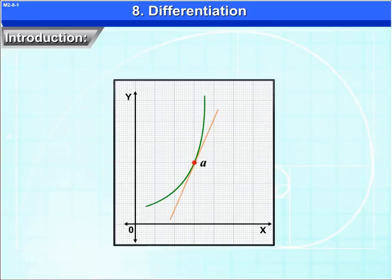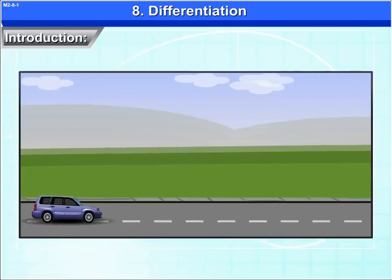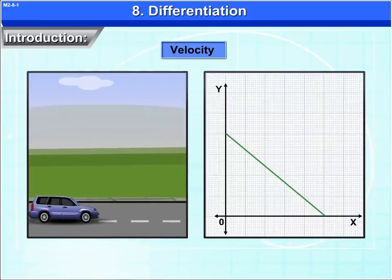We can find slope of tangent of given curve with the help of derivative. We use derivatives to find relative rates, for example velocity.